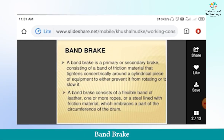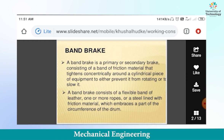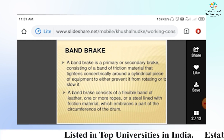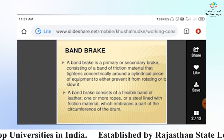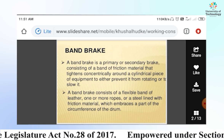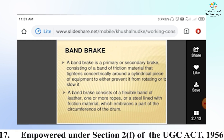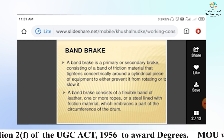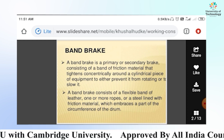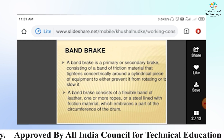Today's topic is band brake from the theory of machines in mechanical engineering. A band brake is a primary or secondary brake consisting of a band of friction material that tightens concentrically around a cylindrical piece to either prevent it from rotating or to slow it.